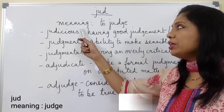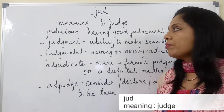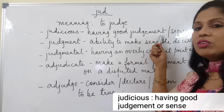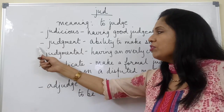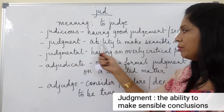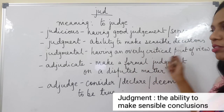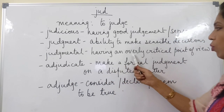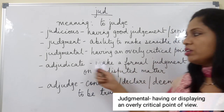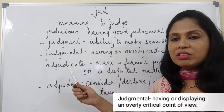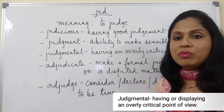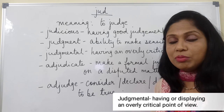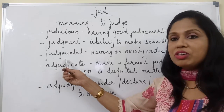The root word 'jud' means to judge. The word judicious means having good judgment or good sense. Judgment means the ability to make sensible decisions. Judgmental means having an overly critical point of view — it is a negative quality. When we form opinions about people without substantial proof, we are being judgmental.